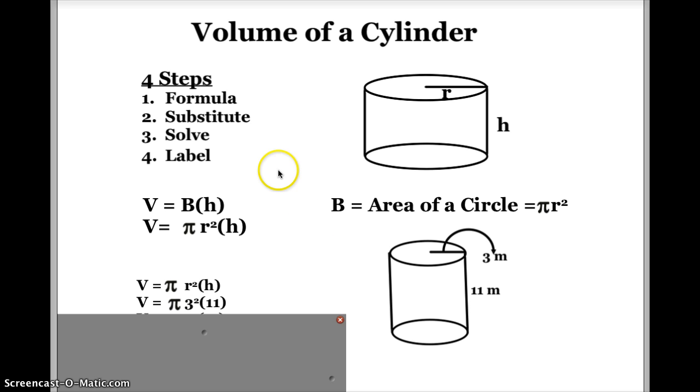Now the next part or the next step is going to be to solve. Well in order of operations, I have multiplication and exponents. I always do the exponents first. So I'm going to take 3 squared. Now 3 squared means 3 times 3, which is 9. So my next line, I'm going to leave everything kind of like order of operations problems now. So it's going to be pi times 9 times 11. Okay, next I'll just multiply the two numbers. 9 times 11 is going to be 99.